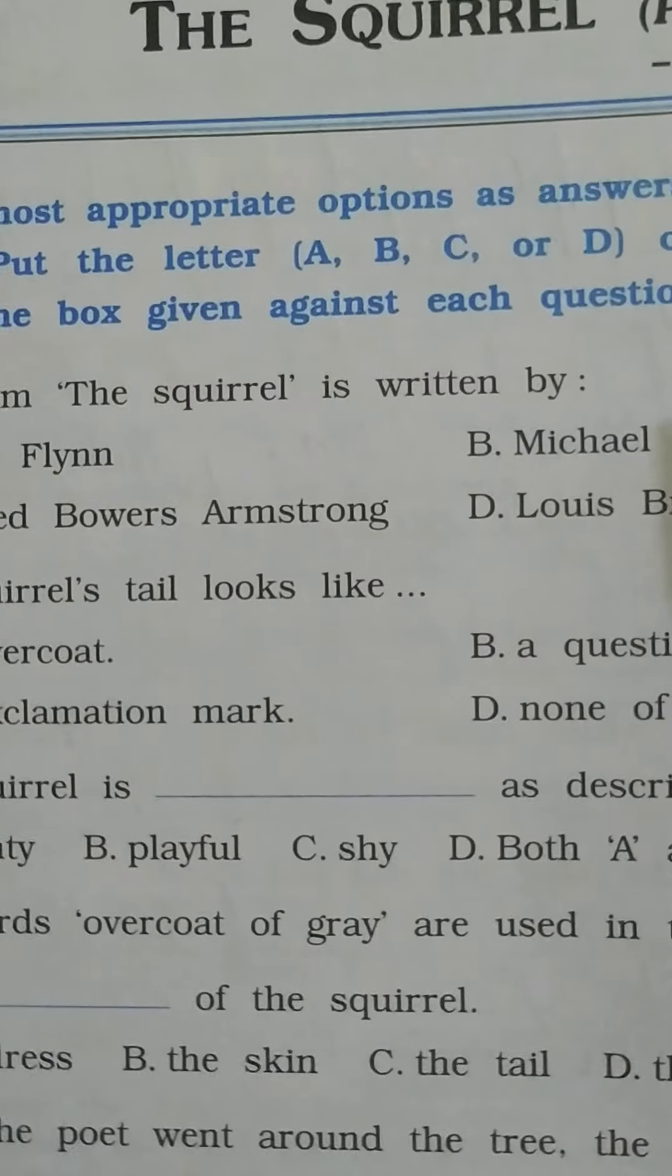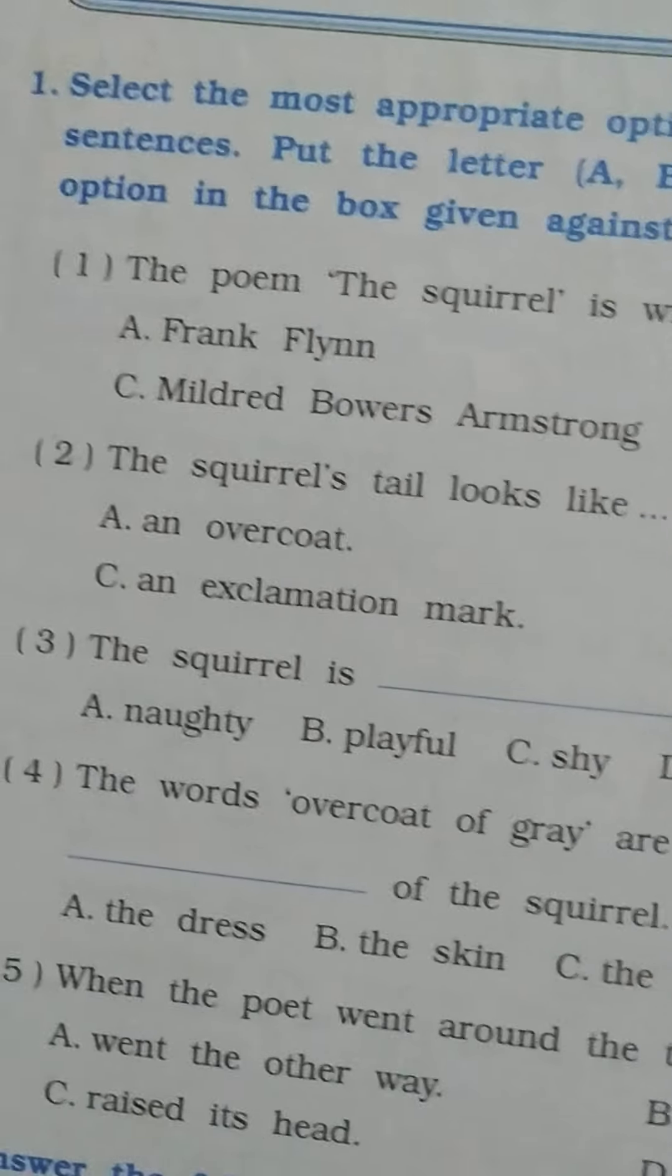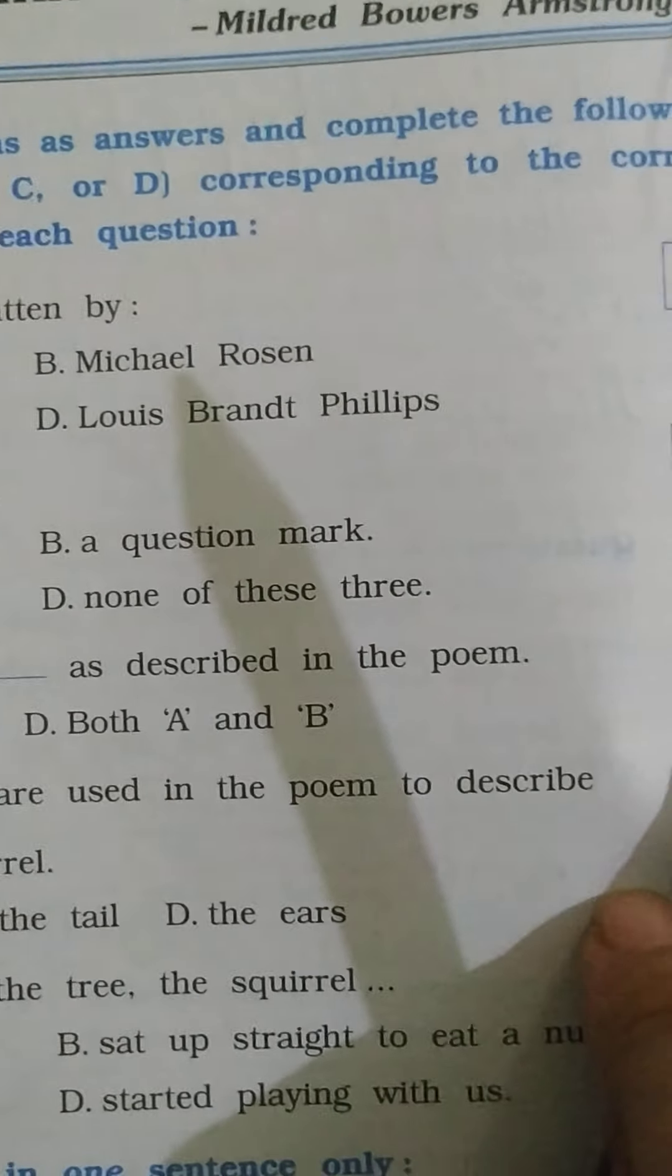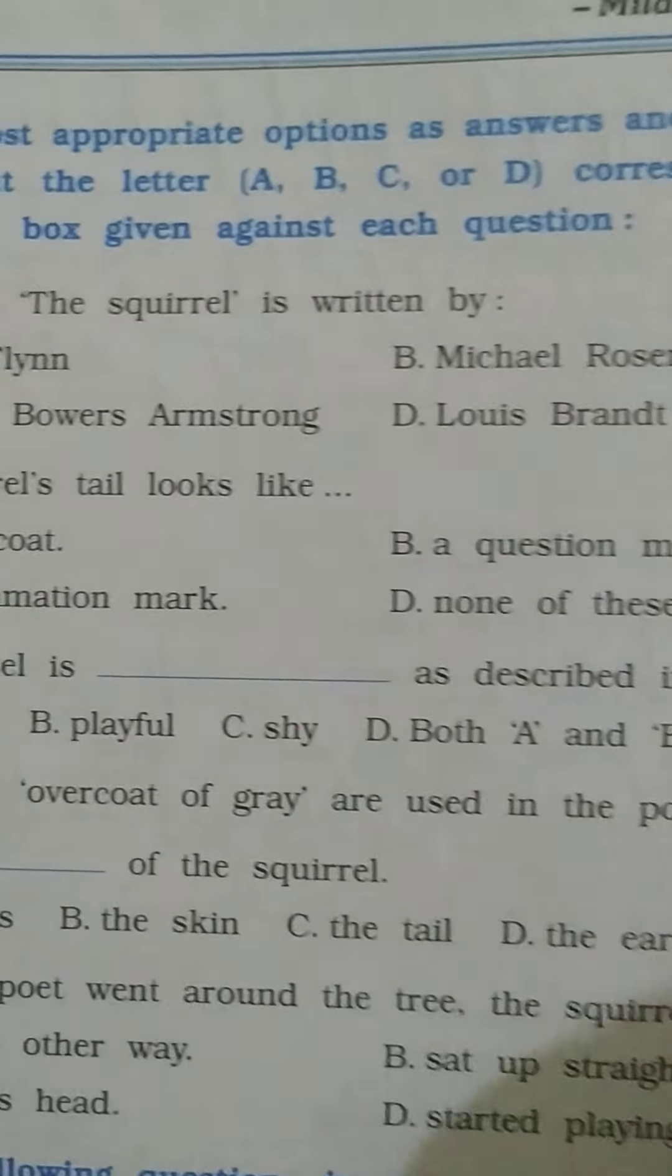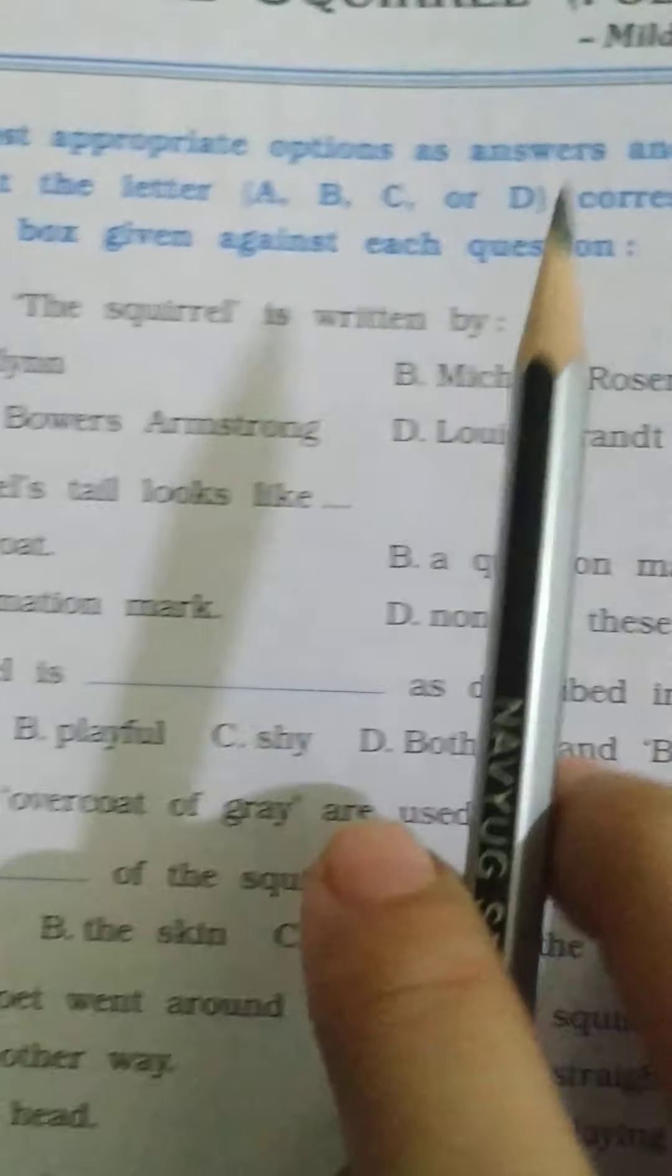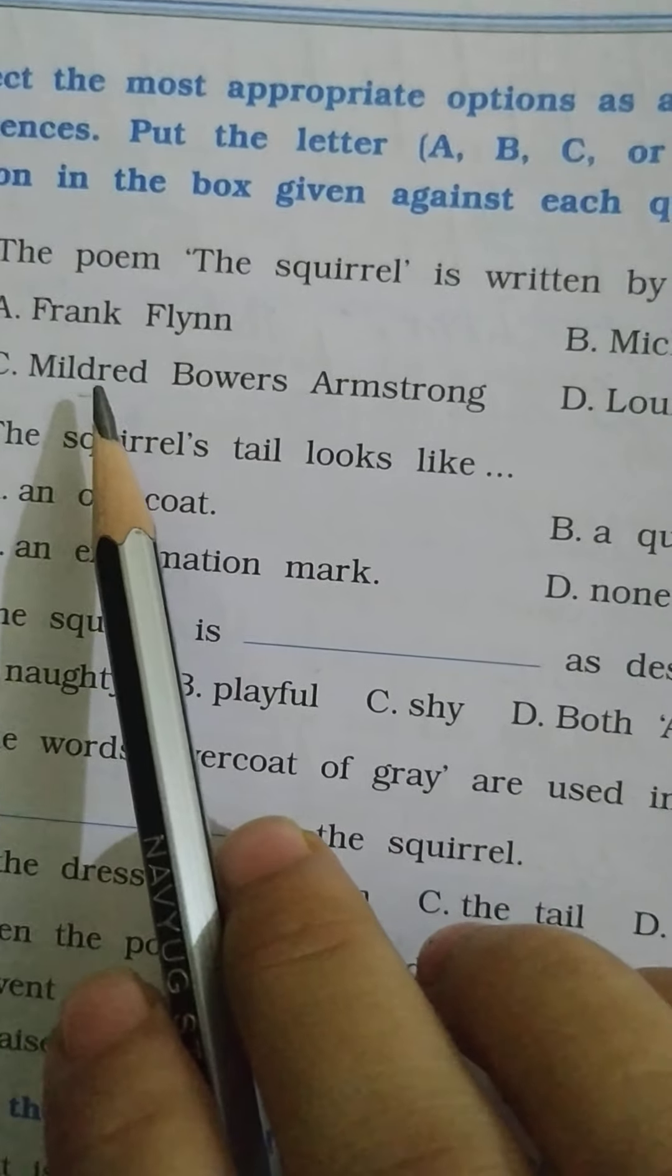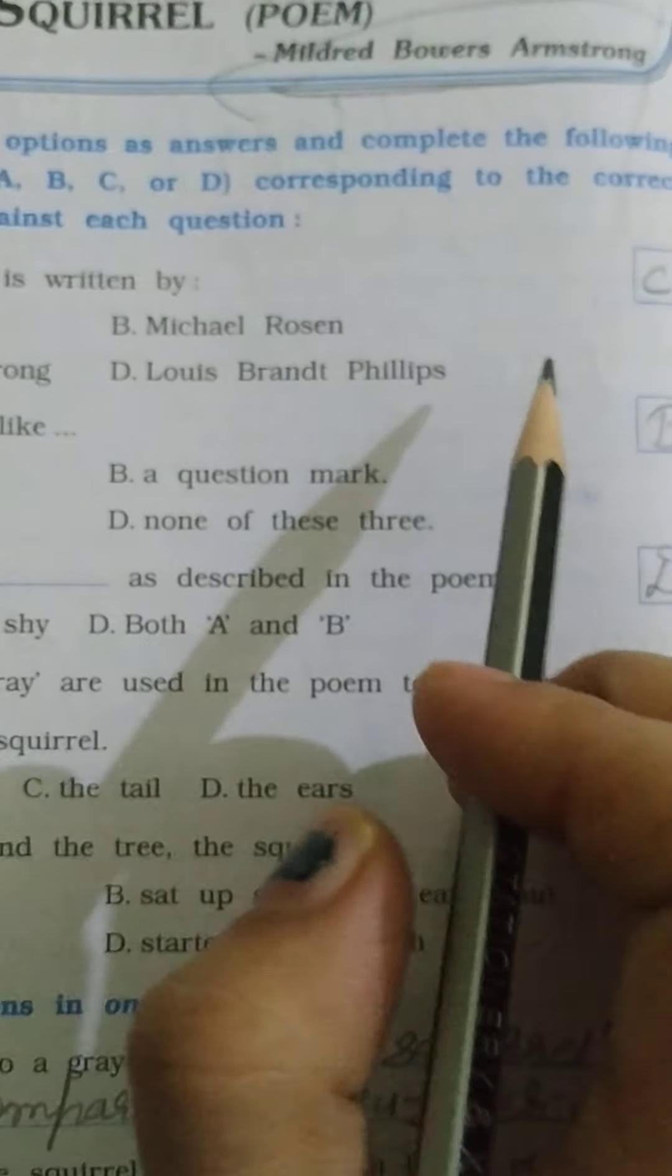Select the most appropriate options as answer and complete the following sentences. Put the letter A, B, C, or D corresponding to the correct option in the box given against each question. The poem The Squirrel is written by Mildred Bowers Armstrong.